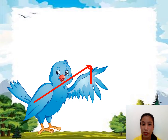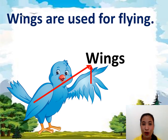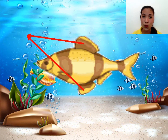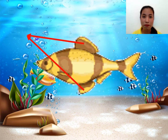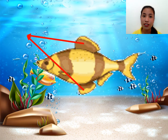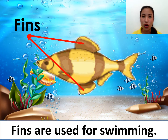How about the bird in the picture? It can fly. And what does the bird use to fly? Its wings. Wings are used for flying. Animals that live in water can swim, just like the fish. What does the fish use to swim? Its fins. Fins are used for swimming.